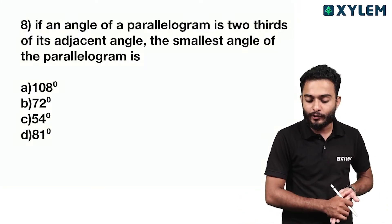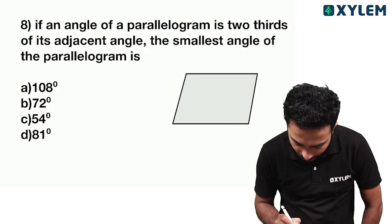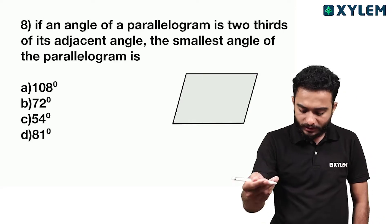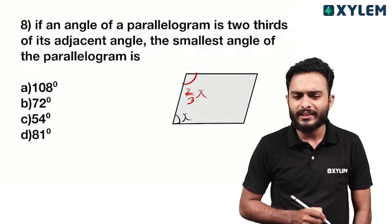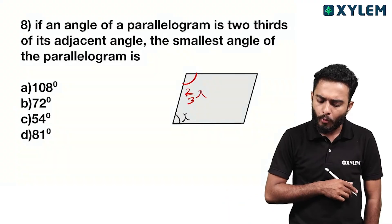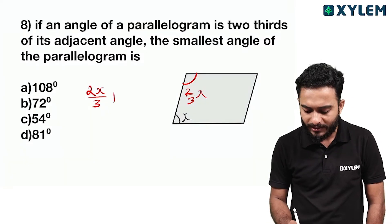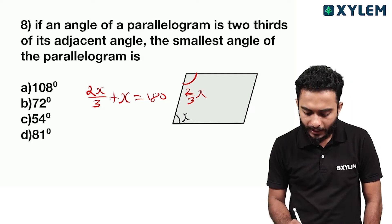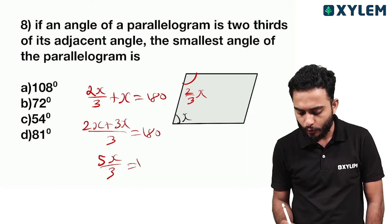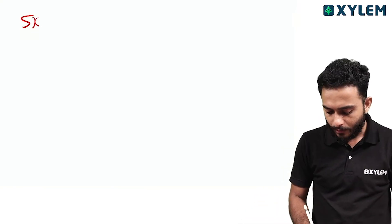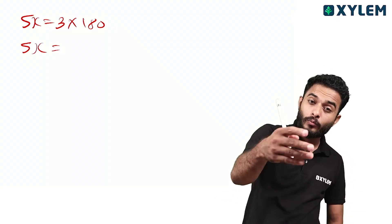If an angle of a parallelogram is two-thirds of its adjacent angle. Let the smallest angle be x, so the other angle is (3/2)x. Adjacent angles of a parallelogram are supplementary: 2x plus 3x, whole divided by 3, is equal to 180. So 5x by 3 equals 180. Therefore 5x equals 3 into 180, which is 540.